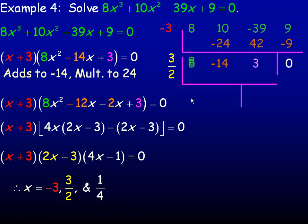Bringing the 8 down and multiplying 8 by 3/2, 3/2 times 8 is actually 24/2, or 12. And so negative 14 and 12 add to negative 2, and we multiply negative 2 by 3/2. The 2 and the negative 2 divide out, leaving 3 times negative 1. So you get negative 3, and a remainder of 0.